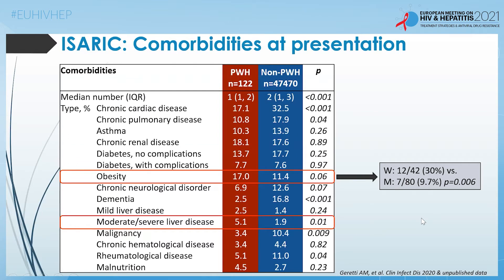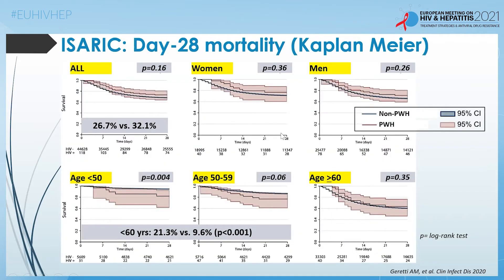In terms of laboratory parameters, we did not find an increased risk of lymphopenia; in fact, the lymphocyte count was higher among people with HIV than without. Day 28 mortality was the primary endpoint. Looking at the Kaplan-Meier curves across the total population, day 28 mortality was 26.7% among people with HIV versus 32.1% among people without HIV — suggesting no dramatic overall difference in risk.